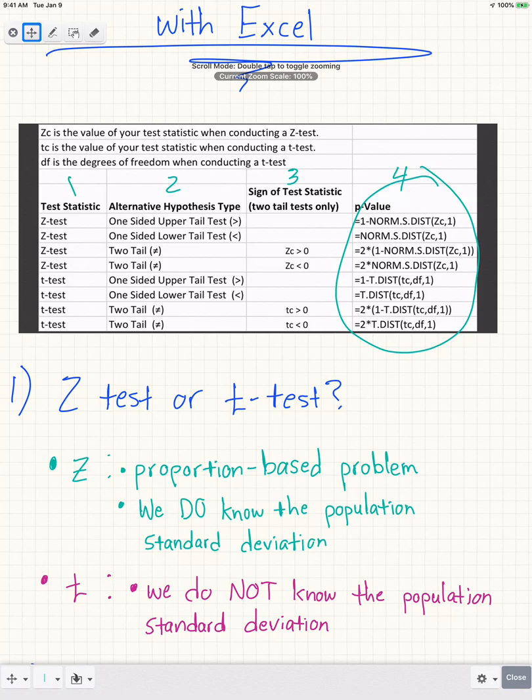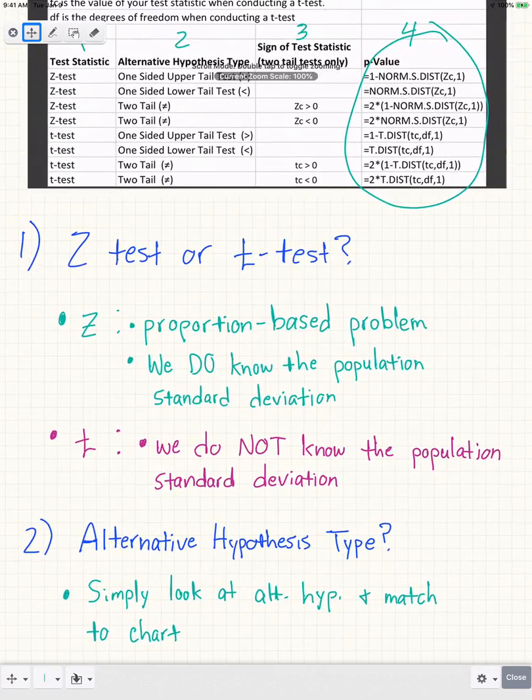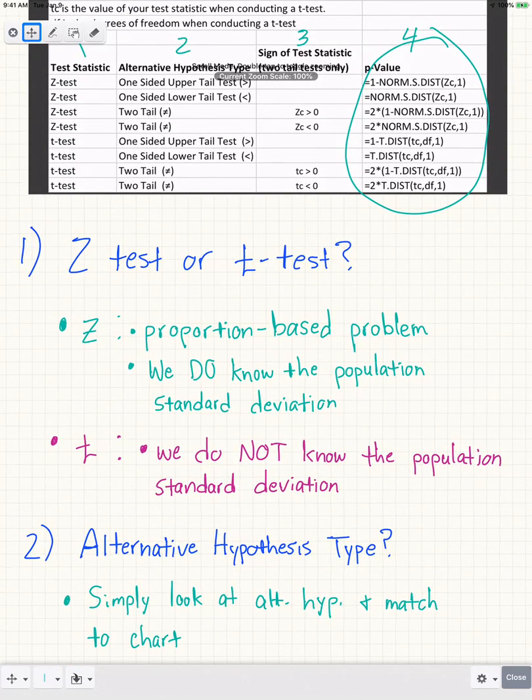That's how you decide the first criteria. Moving on, we're talking about the alternative hypothesis type. At this point, you should have already set up your null and alternative hypotheses. If you're not sure how to do that, I have another video that explains whether you're dealing with a one-tail or two-tail test, and if it's a one-tail test, how to know if it's an upper-tail or lower-tail test.